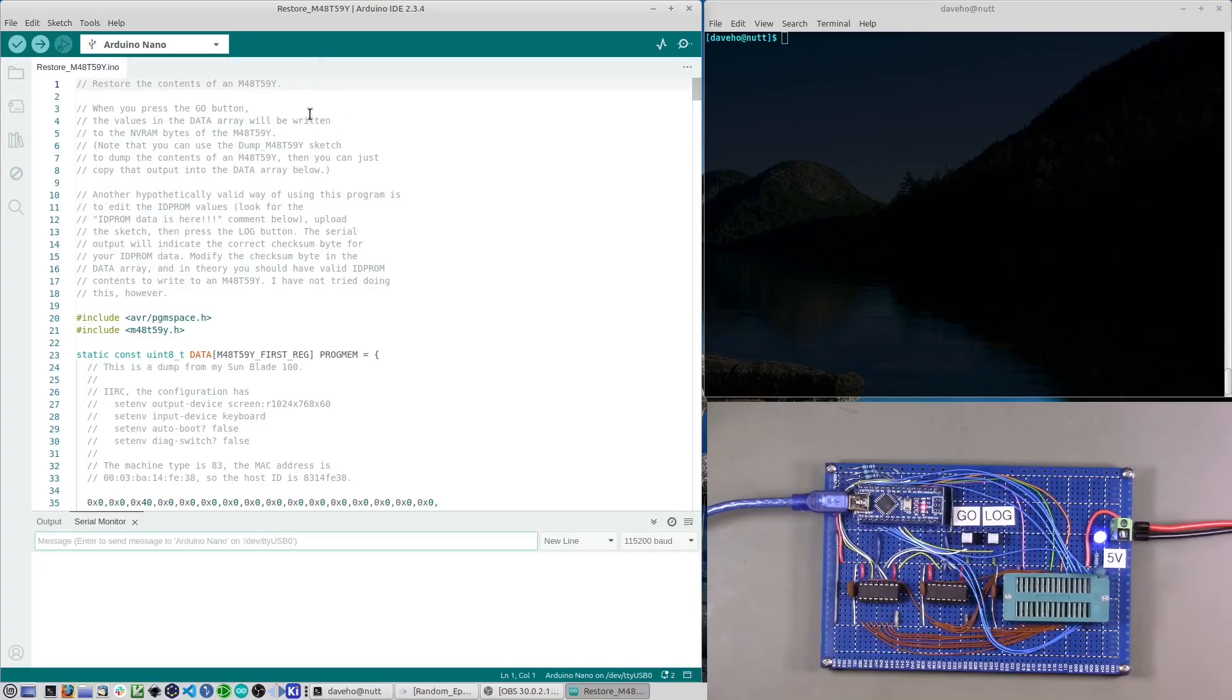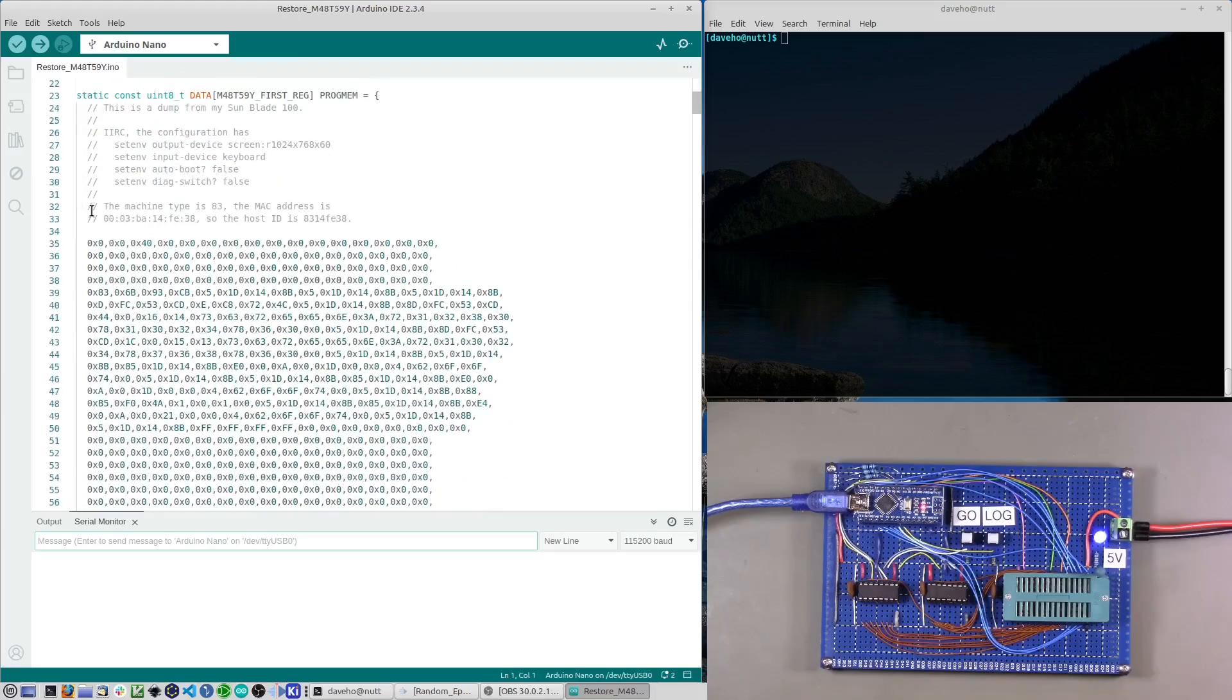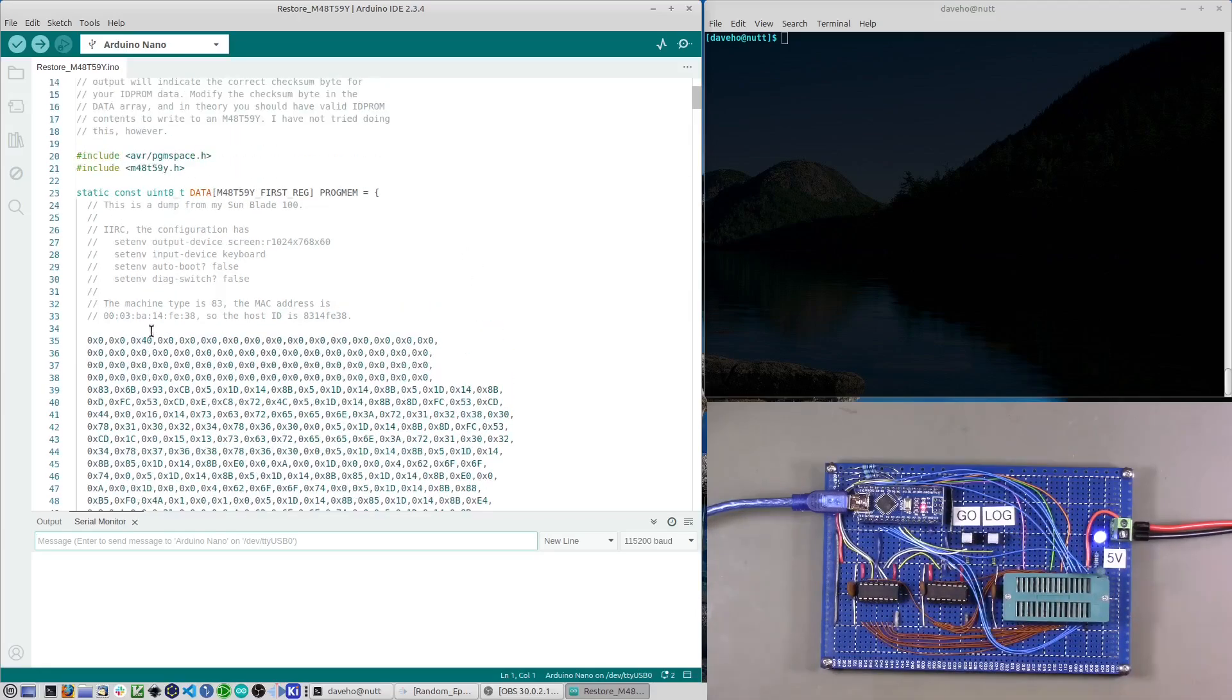The last sketch to demonstrate is the restore sketch. This is basically the opposite of dump. The idea is that you fill in this array with your hex data corresponding to the NVRAM contents you want to write into the device. Then you run the sketch and it programs them into the device. The data that I have here is actually a valid capture from my Sun Blade that is set up with some useful configuration info, including the Mac address and host ID and some boot options.